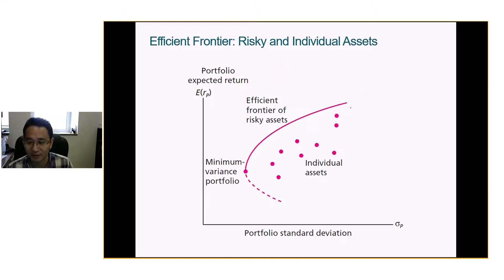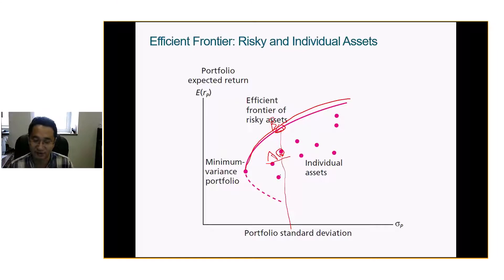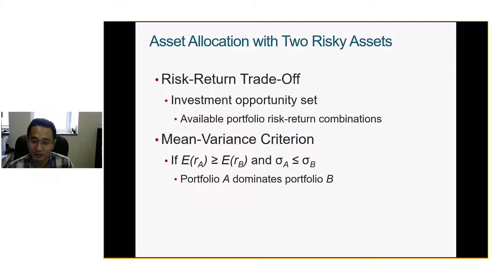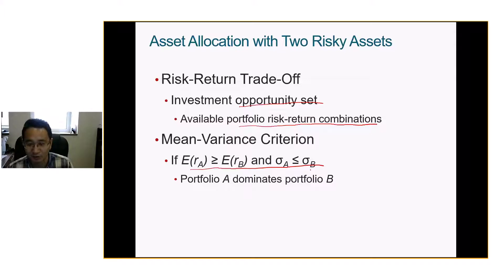If you stack them all together, you get an optimal curve on the edge. Any portfolio on this line is better than anything below this curve because, with the same risk, it has a higher return. This gives you the investment opportunity set — available portfolio risk-return combinations. Because we follow mean-variance criteria, portfolio A dominates portfolio B if A gives a higher return for the same risk.